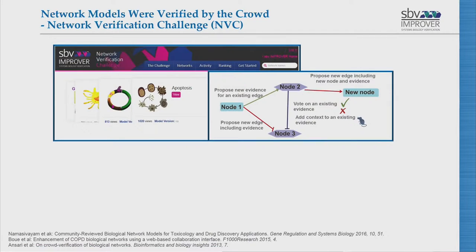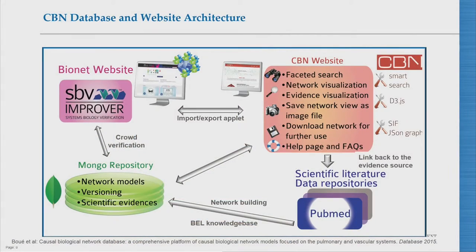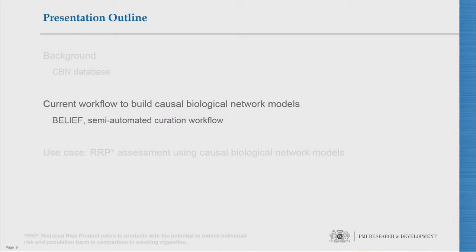I won't talk about the network verification challenge because Natalia will cover it — in essence we gave the networks to the crowd and they reviewed them. This is the architecture of CBIN: first we have the network model building occurrence, then the network models are stored in a Mongo repository that connects with the Bionet website, the crowd verification platform. The front end is CBIN, where you can work on the models in many different ways and always go back to the evidence source, the original publication.